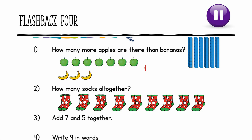Question 2. How many socks are there altogether? Can you see that the socks are being grouped into 2s? So that means I can count in 2s to find the answer: 2, 4, 6, 8, 10, 12, 14, 16, 18. I have 18 socks altogether.